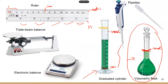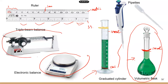For weight, this is the electronic balance, which we use a lot in the biology lab. And this is what a triple beam balance looks like — I think it's very old-fashioned. Maybe it's still used in some labs, but I have never seen a real triple beam balance in the lab.